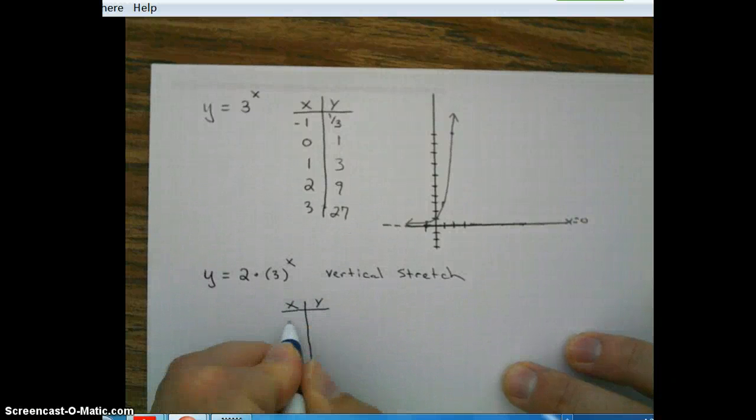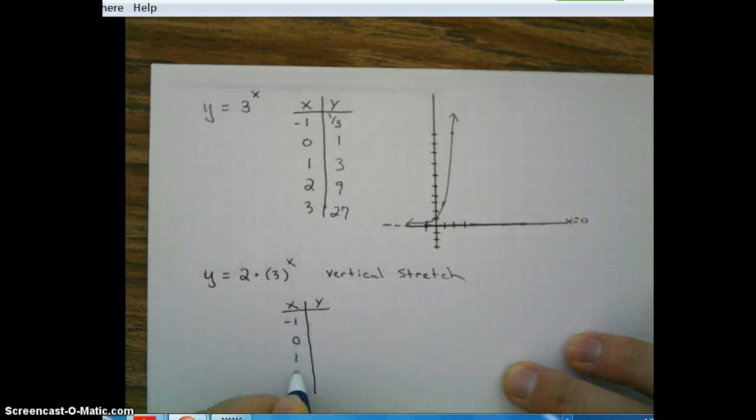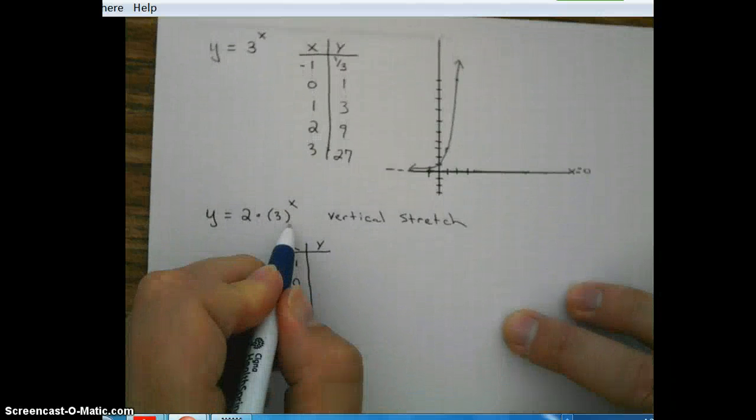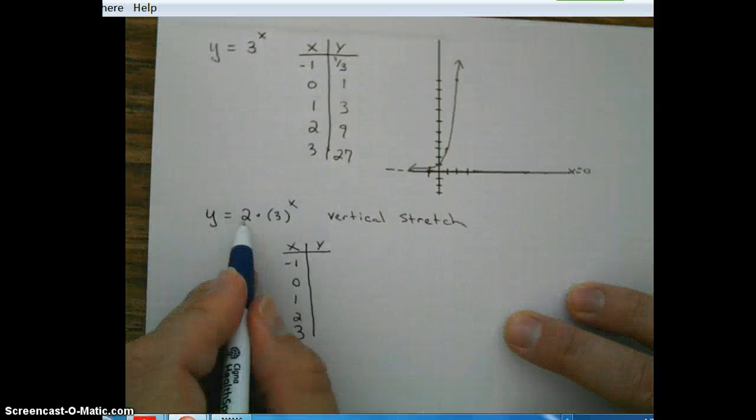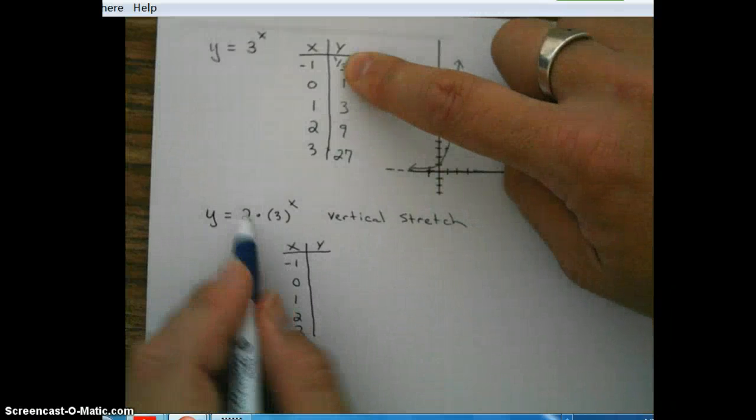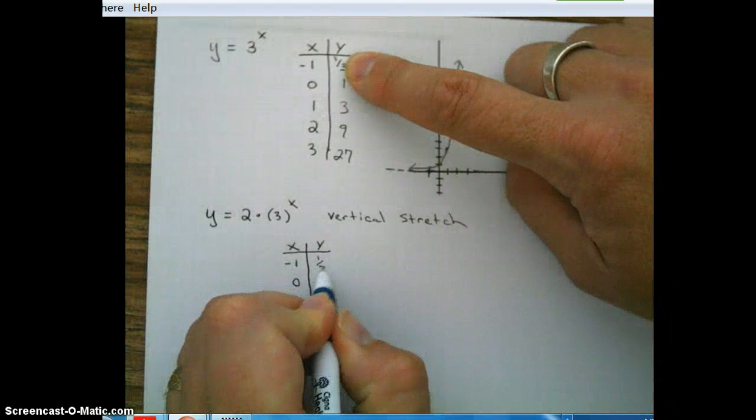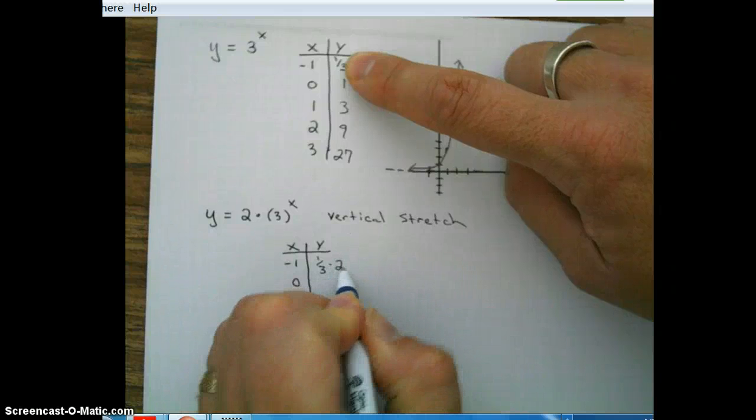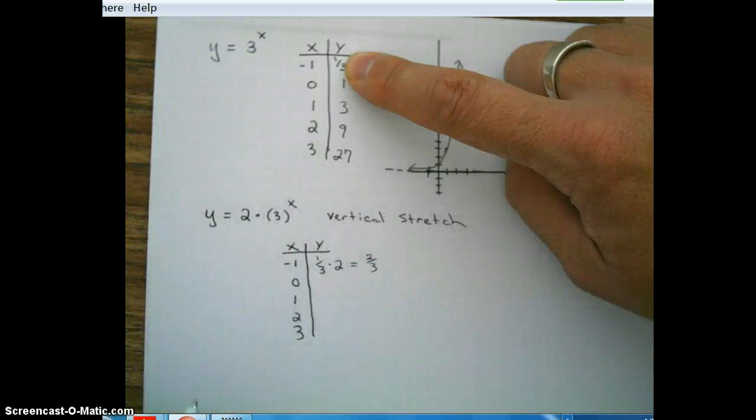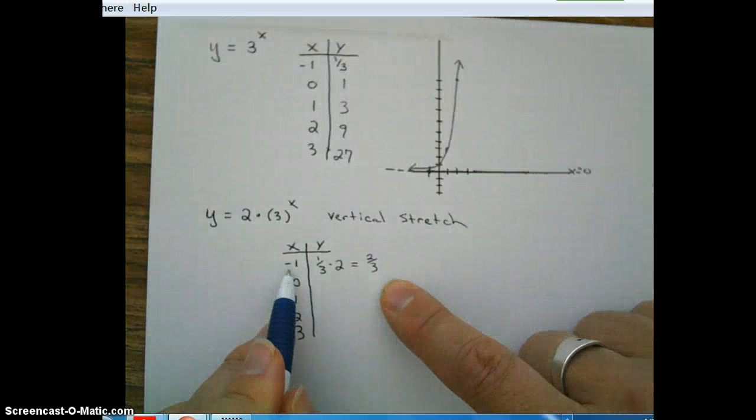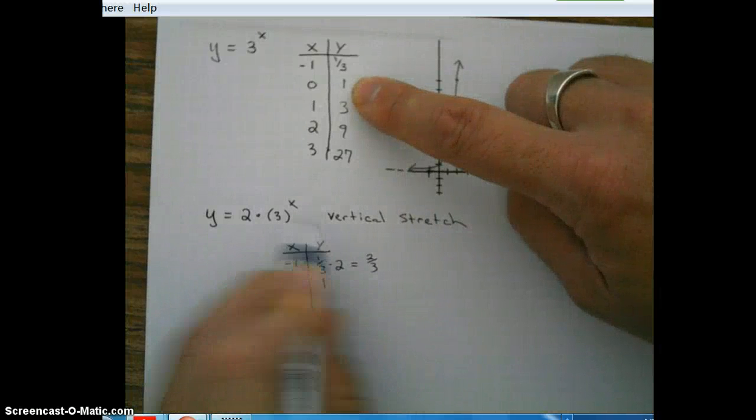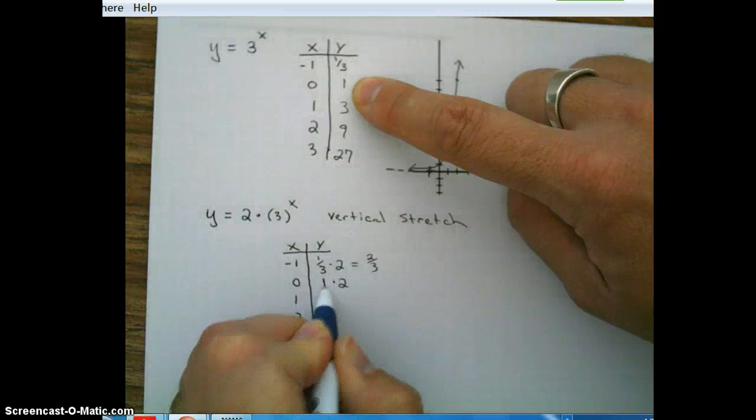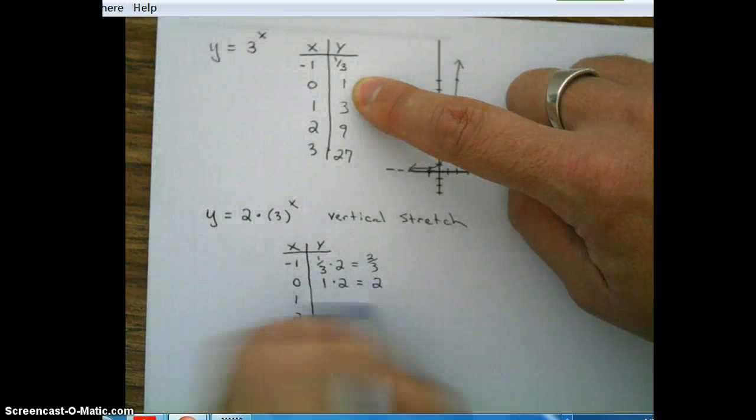So, looking at our table. So again, 3 to the x represents y. So we're going to take all our y-coordinates and multiply them by 2. So 1 third times 2 gives us 2 thirds. So our new coordinate is going to be negative 1, 2 thirds. Okay, 0, 1, multiply by 2. So our new coordinate is 0, 2.